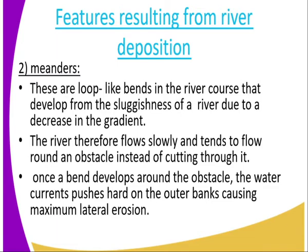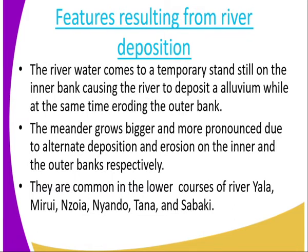Once a bend develops around an obstacle, the water current pushes hard on the outer banks, causing maximum lateral erosion. The river water comes to a temporary standstill on the inner bank, causing the river to deposit alluvial material, while at the same time eroding the outer bank. So deposition takes place at the inner bank while erosion occurs at the outer bank.